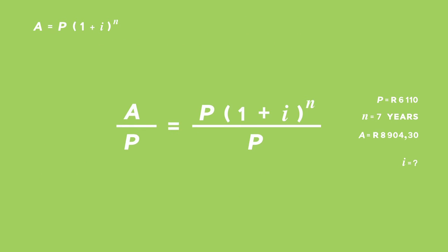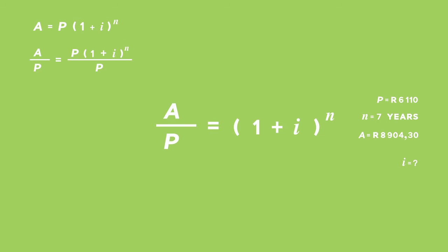Divide both sides by P. This is equal to open brackets, one plus i, close brackets, raised to the power of n. Remember, you're trying to get to i. Since the expression on the right-hand side is raised to the power of n, we will then need to get rid of that power of n by taking the nth root on both sides. We take the nth root of A divided by P is equal to one plus i.